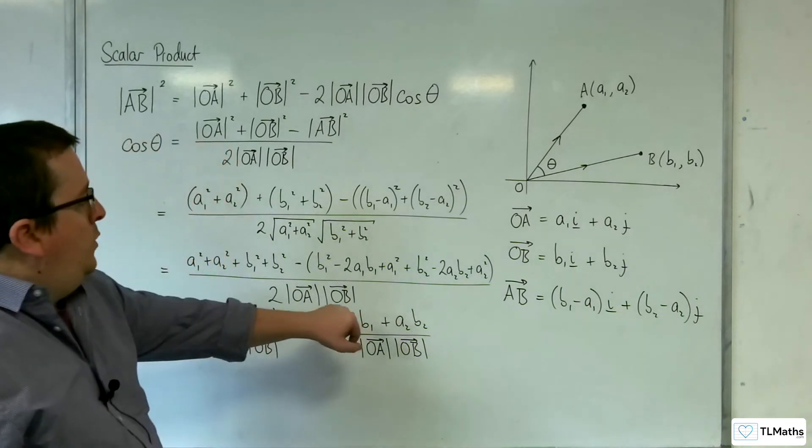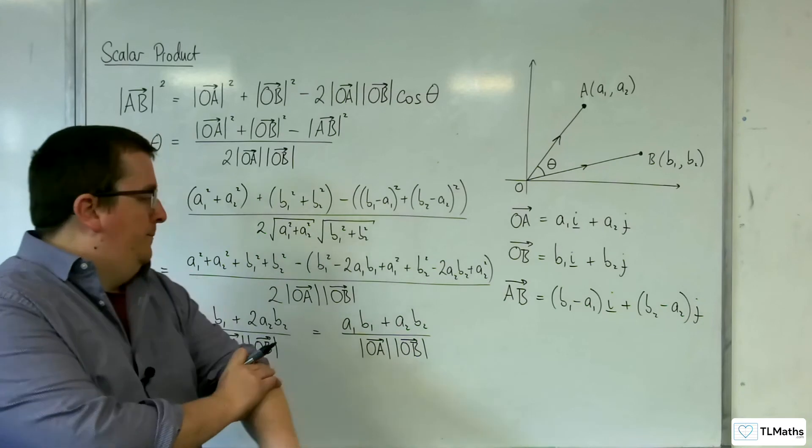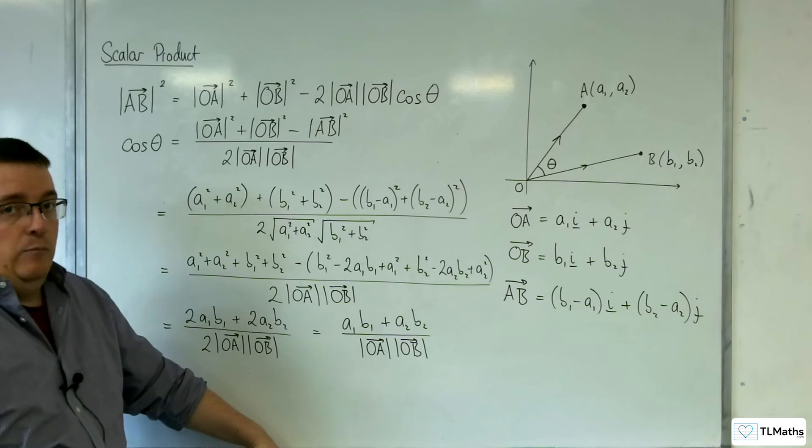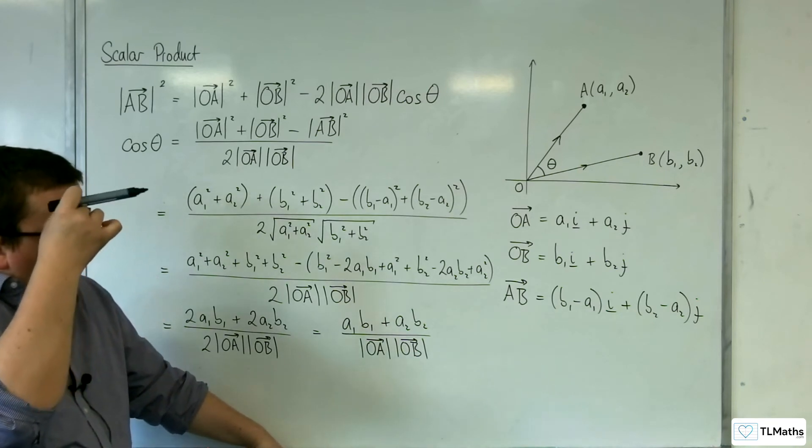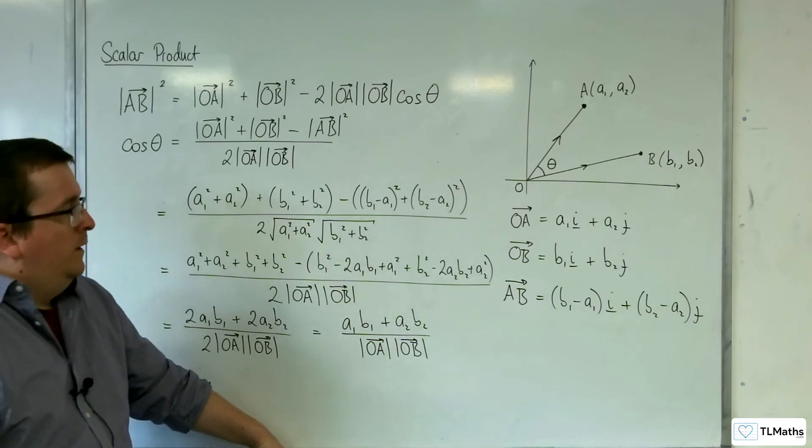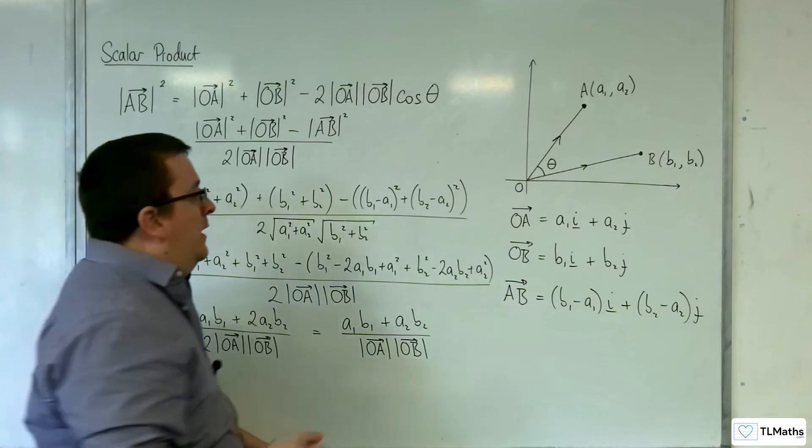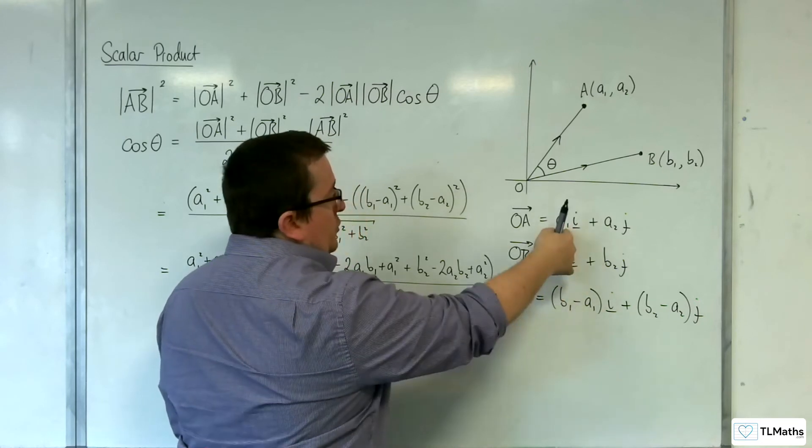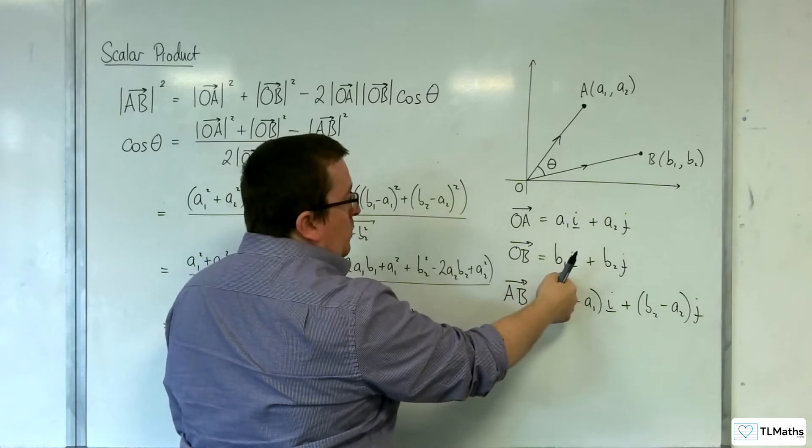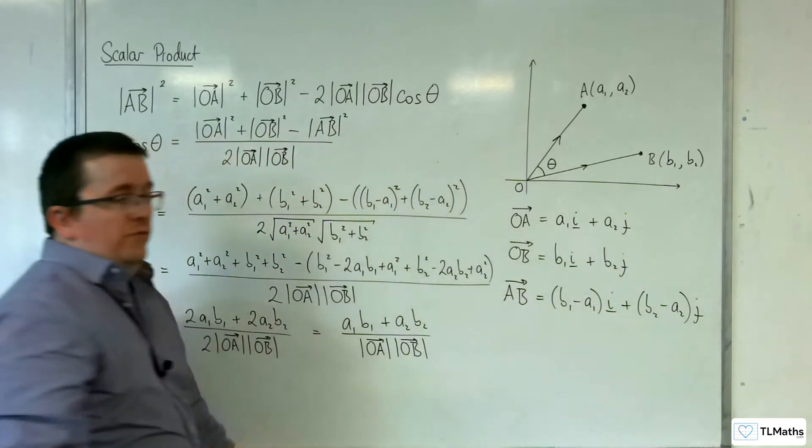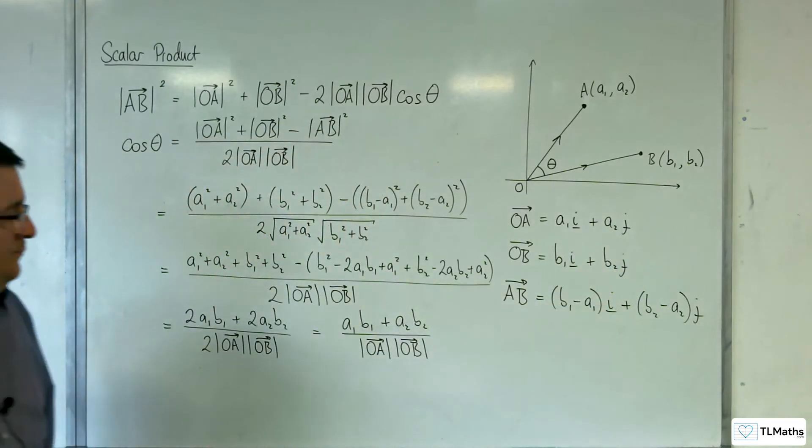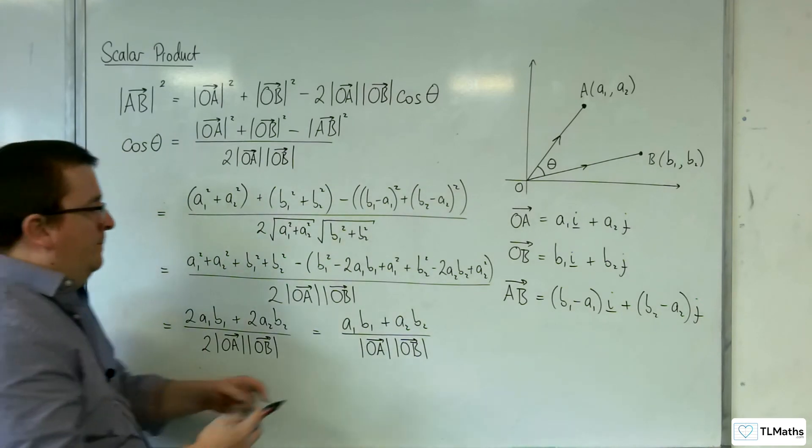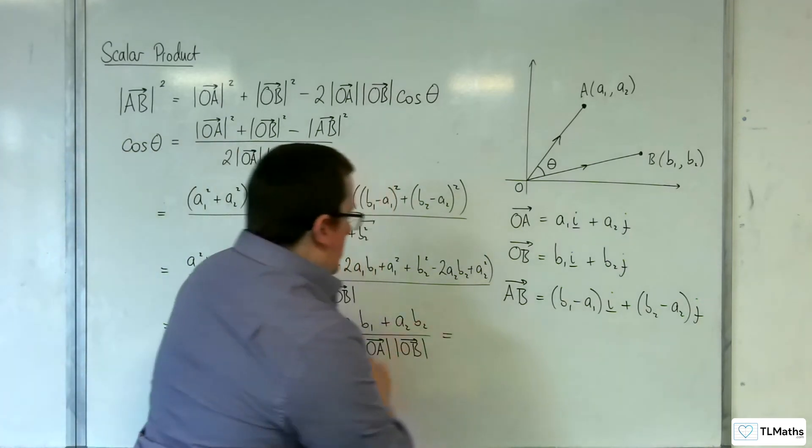So what you have in the numerator here is what we refer to as the scalar product of the two vectors OA and OB. You can see that all it is, is you multiply the coefficient of the i's together, so A1 times B1, and then you add on A2 times B2. That's all it is. And what we do is we give it a new notation.